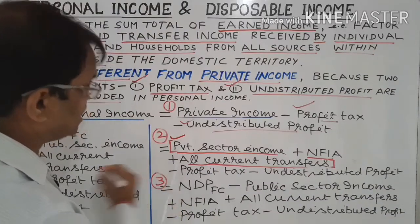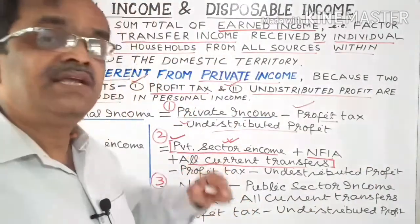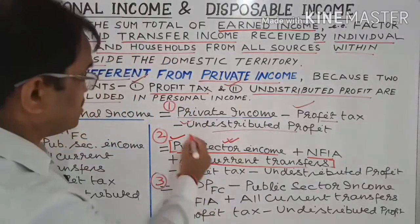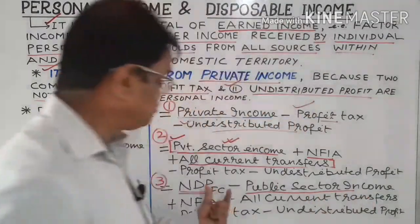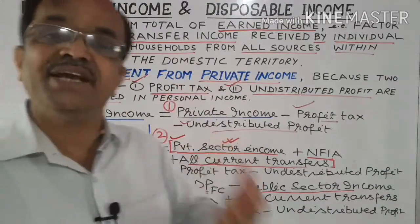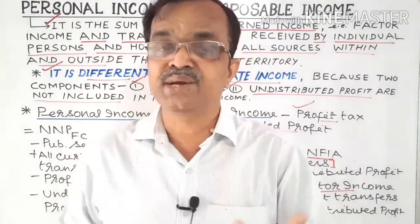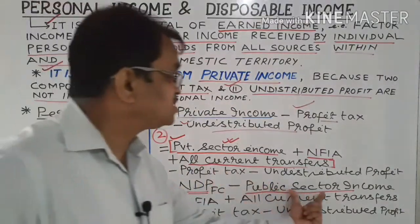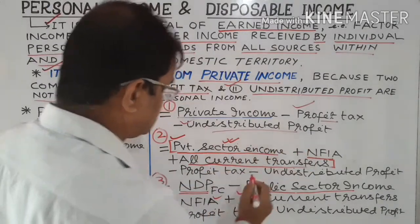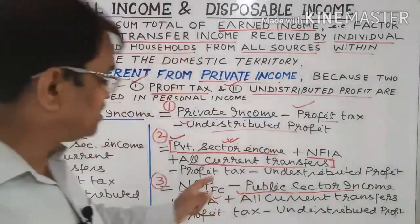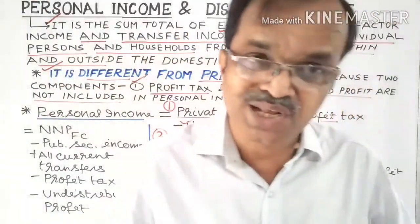The third formula: if private sector income is not given in the question, we use NDP at FC — that is, domestic income — and simply deduct public sector income from this domestic income to get private sector income. This works because private sector income plus public sector income equals domestic income (NDP at FC). Then we add NFIA and all current transfer incomes, and deduct profit tax and undistributed profit to again get personal income.